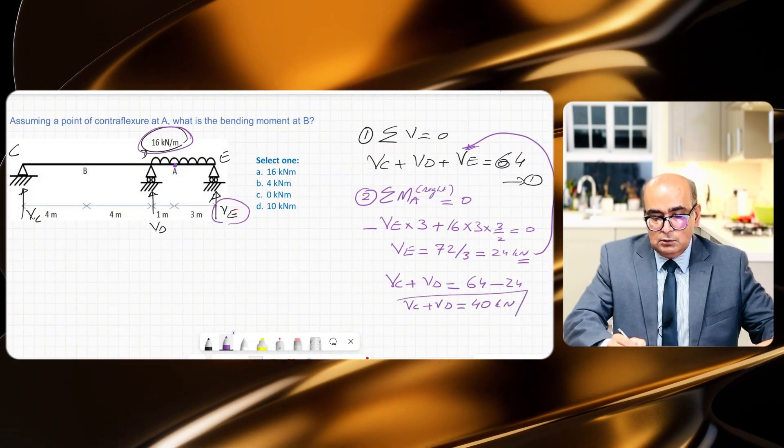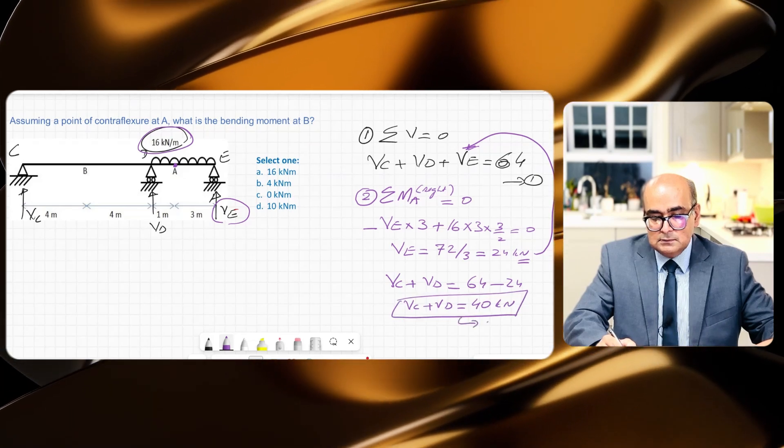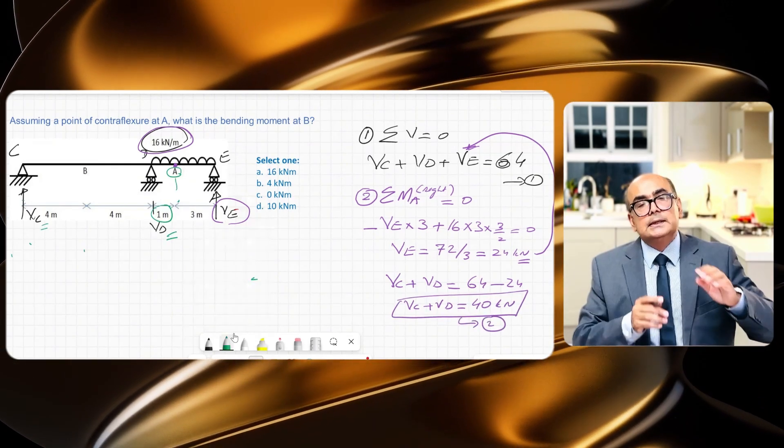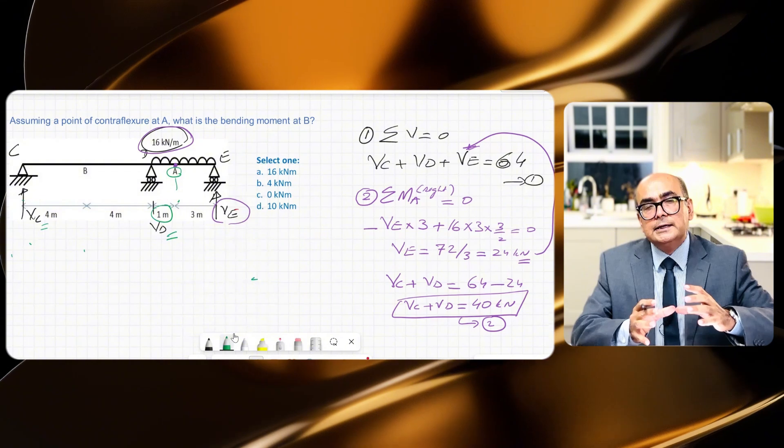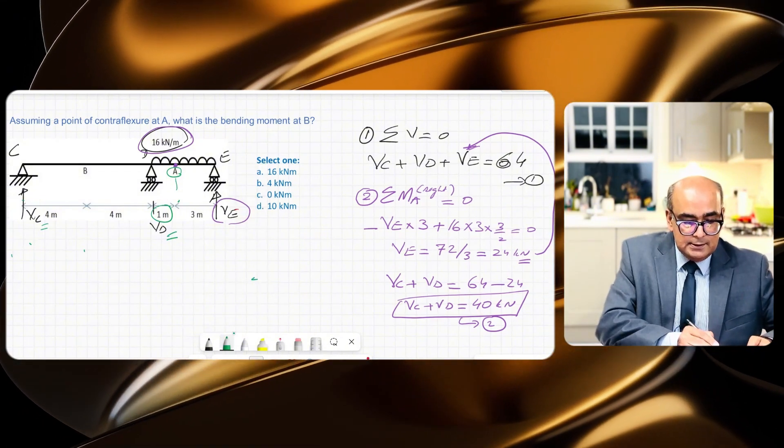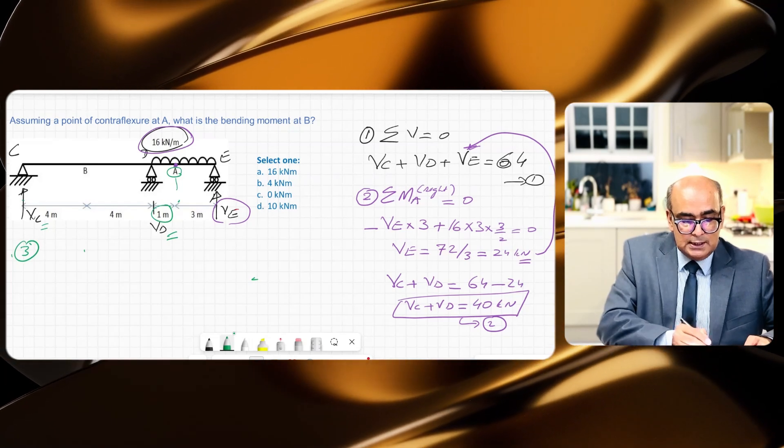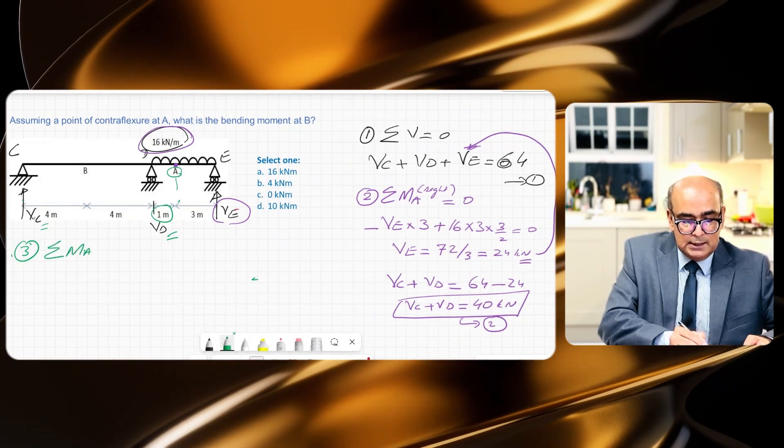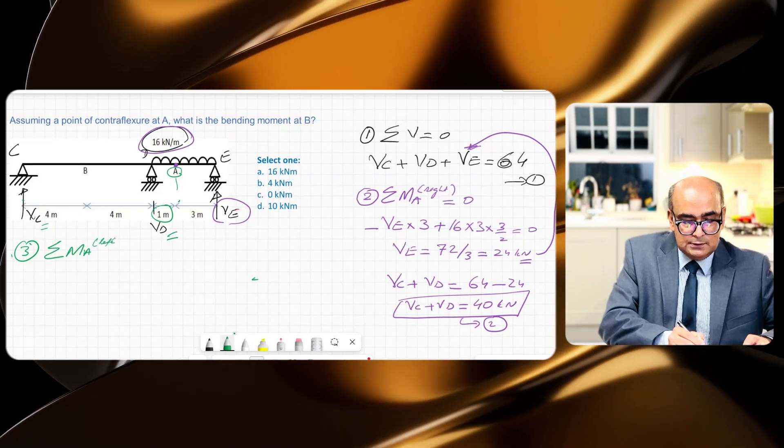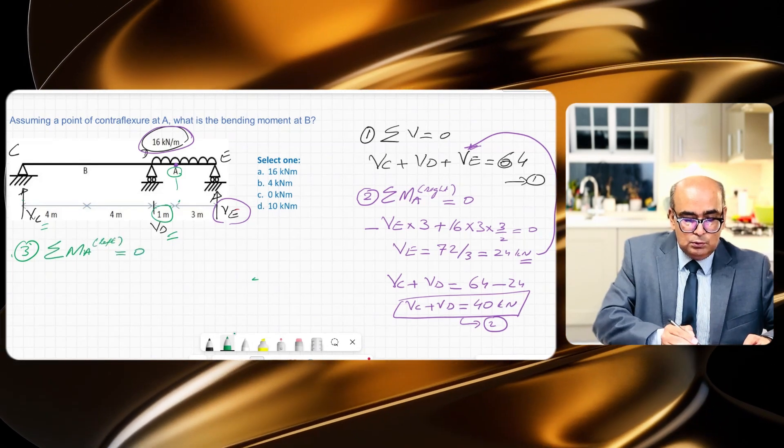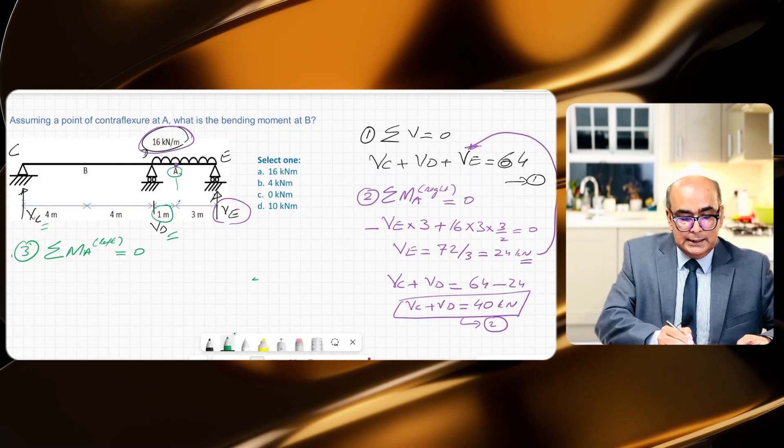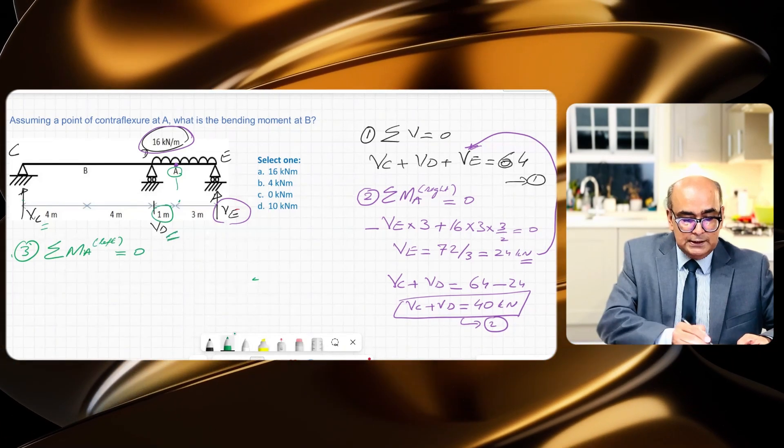In the third step I want to find out moment at A, but from left side, and that is equal to zero because A is pin. So summation of moment at A but from left is equal to zero. Now in that way I will find out reactions at VD and VC.